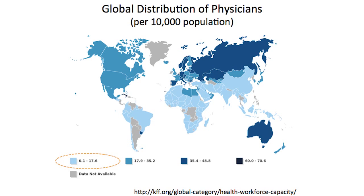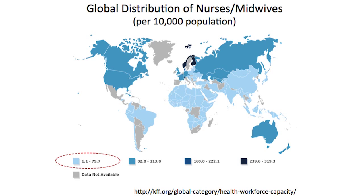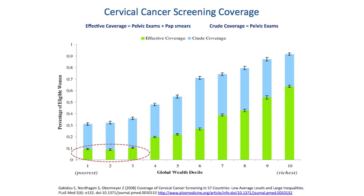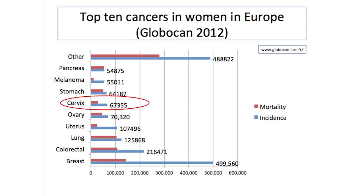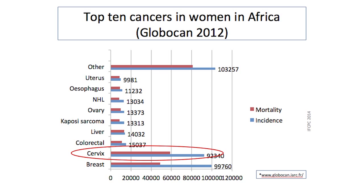This is a map showing the global distribution of physicians. Where it's light blue, you have very low numbers of physicians; where it's dark blue, you have lots of doctors. Same thing with nurses — they follow the flow of the dollar. In the poorest countries, only 5% to 10% of women have ever been screened for cervical cancer, whereas in the richest countries, it's 60%, 70%, 80%. So among the top 10 cancers in women in Europe, cervix is number six. When you get down to low-income countries or Africa, cervix is number two. And in sub-Saharan Africa, it's number one.